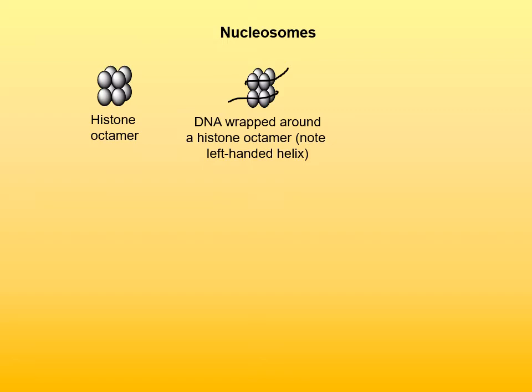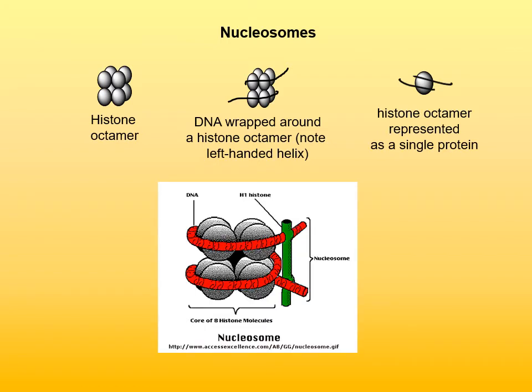The ends are then sealed by histone H1. Here on the far right, the histone octamer is represented as a single X-shaped unit — that's how it will be represented in future slides. Here is a better illustration of the nucleosome: it shows the histone octamer as 8 gray spheres with double-stranded DNA shown in red, and H1 histone shown in green sealing the ends of double-stranded DNA to the histone core. H1 histone also organizes 40 to 60 base pair strands that link neighboring nucleosomes.